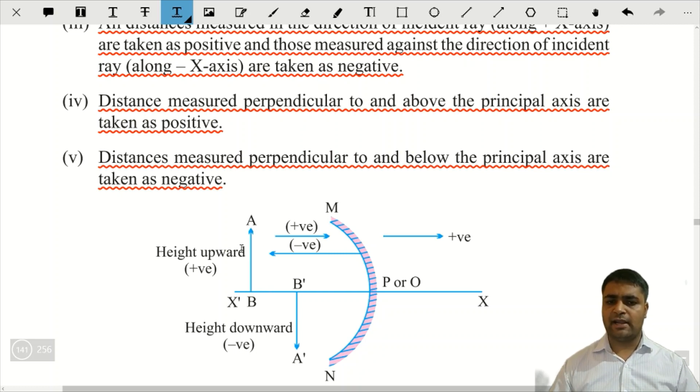Toh yaha par bhi yeh concept use karna hai. Say, object ko hum kya rakhengi, left mein. Toh origin se left mein, kya rakhengi? Negative values. Origin ke right mein kya rakhengi? Positive values. Origin ke oopar kya rakhengi? Positive values. Origin ke neeche kya rakhengi? Negative values.